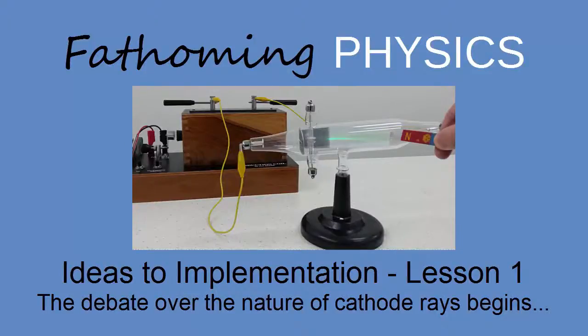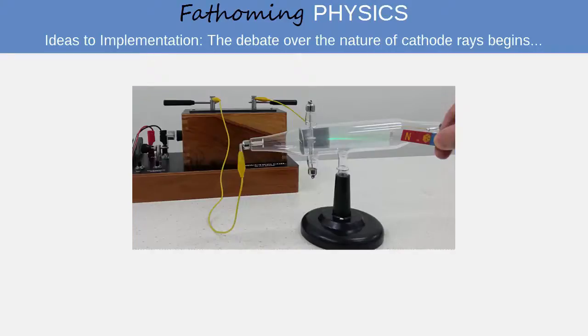Welcome to Lesson 1 of the first part of Ideas to Implementation. In this section, we will examine the discovery of cathode rays, and the subsequent debate that raged from the mid-1850s to the late 1800s about their nature.